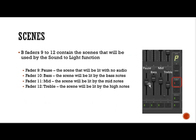What we use is scenes, and we have four faders — numbers 9, 10, 11, and 12. The first fader, 9, is called pause, and it controls a scene that will be lit when there is no audio. If there are pauses in audio, this scene will be lit — typically I'll have some white light. Fader 10 controls the scene lit by bass notes, 11 is mid-range, and 12 is treble.